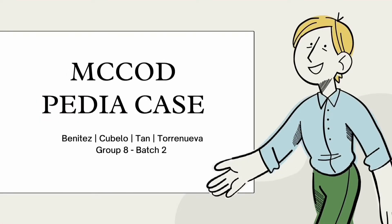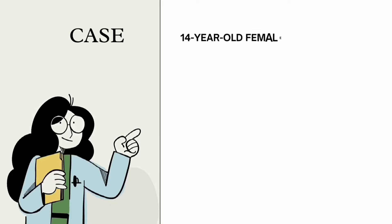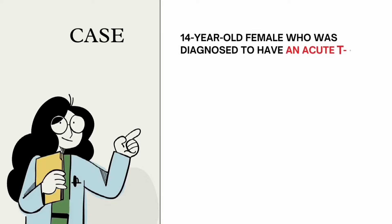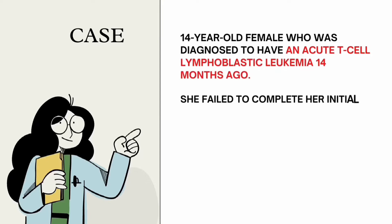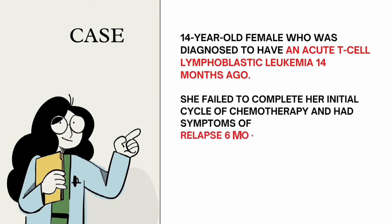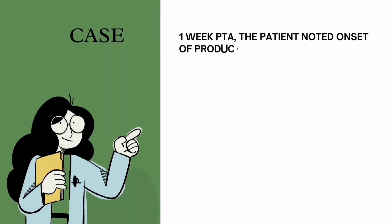This is a case presentation by Group 8, Batch 2. We have a case of a 14-year-old female who was diagnosed with acute T-cell lymphoblastic leukemia 14 months ago. She failed to complete her initial cycle of chemotherapy and had symptoms of relapse six months ago, including loss of vision.